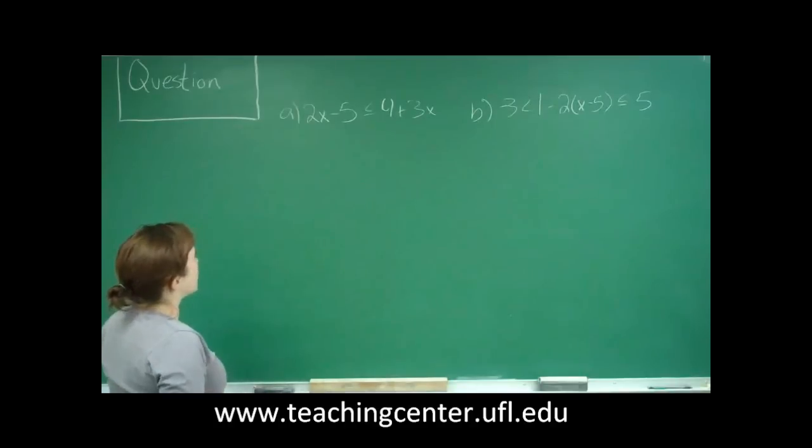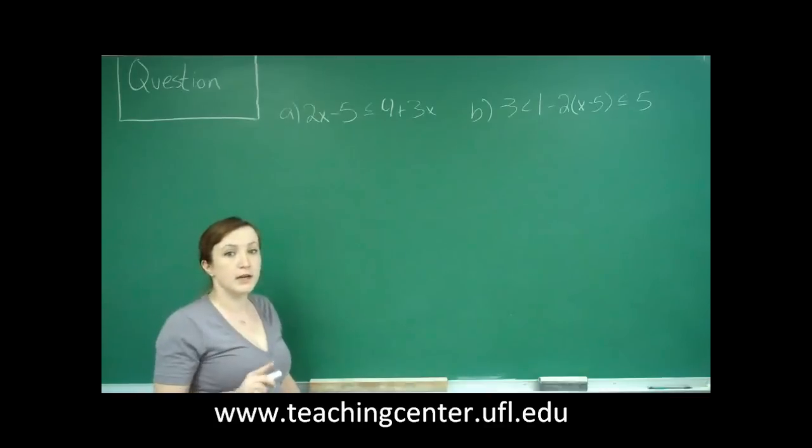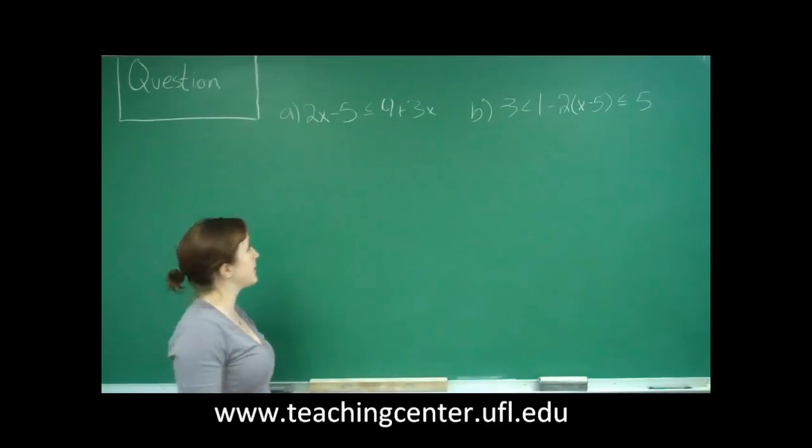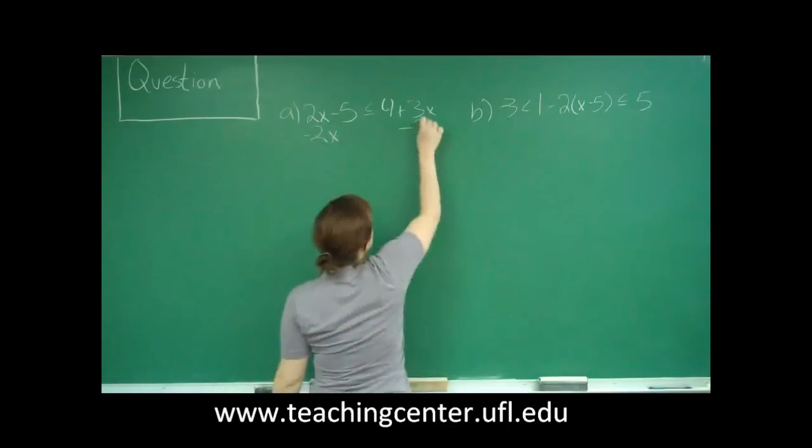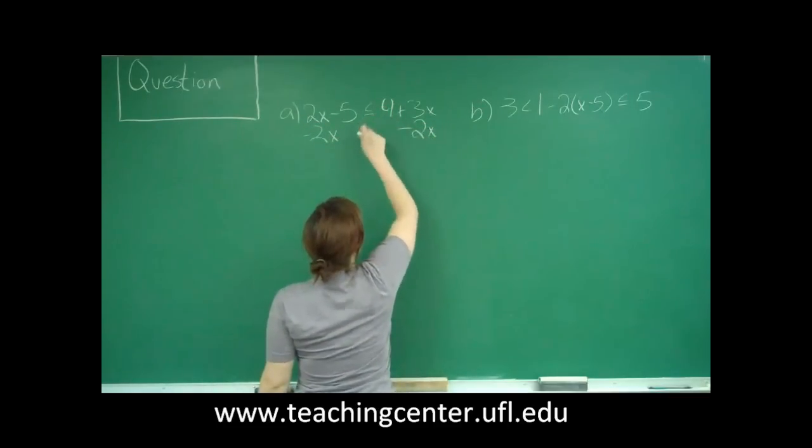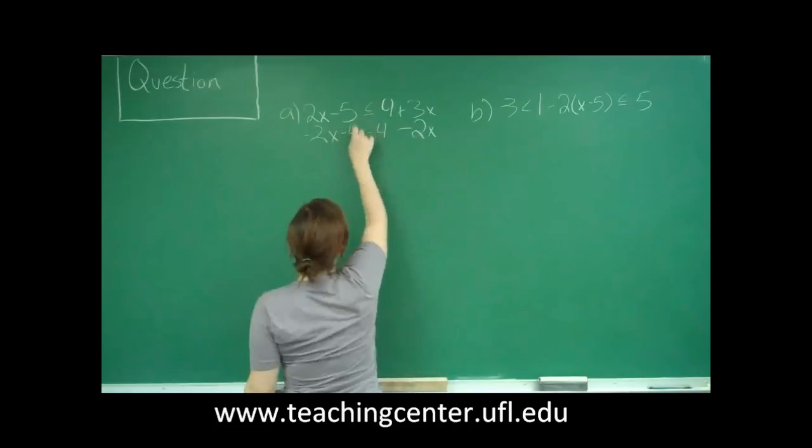It says 2x minus 5 is less than or equal to 4 plus 3x. So our goal here in this problem, we want to get all of our x's to one side and all of the terms without x to the other.